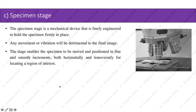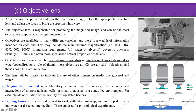The specimen stage is a mechanical device finely engineered to hold the specimen firmly in place; any movement or vibration is detrimental to the final image. The stage enables the specimen to be moved in fine, smooth increments both horizontally and transversely for locating a region of interest. After placing the prepared slide on the stage, select the appropriate objective lens and adjust focus to bring the specimen into view. The objective lens produces the magnified image and can be the most expensive component of the light microscope.